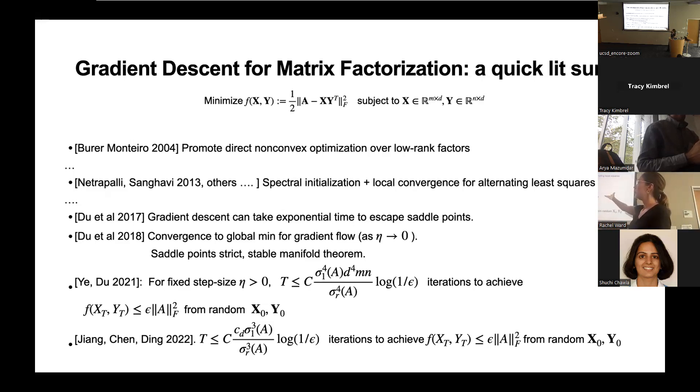And then lots of people later on promoted for matrix factorization and also a suite of non-convex optimization problems for which matrix factorization is the simplest one, including Netropaali, Jane, and Sangave. They showed that usually a spectral initialization plus local convergence for alternating least squares can give you a good competitive algorithm for solving factorization problems.